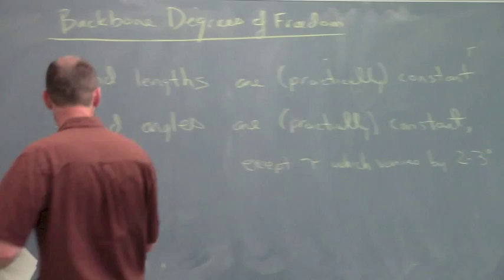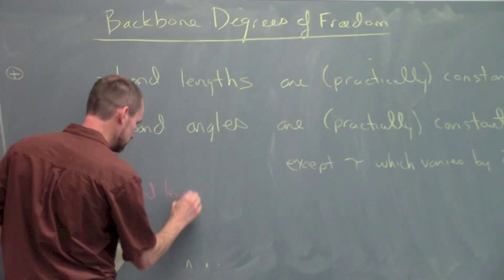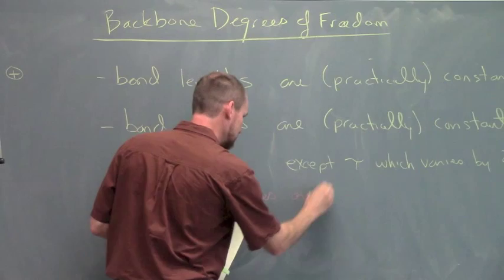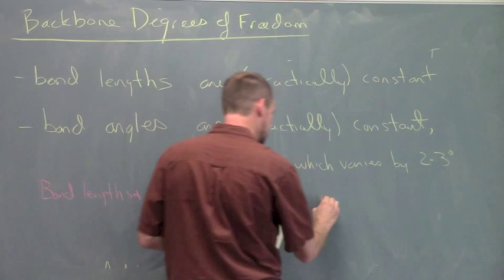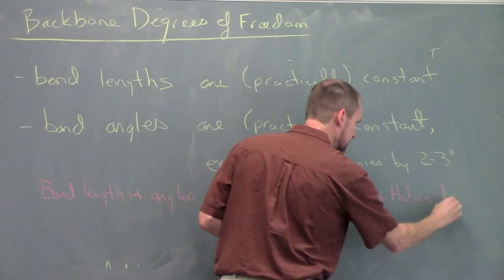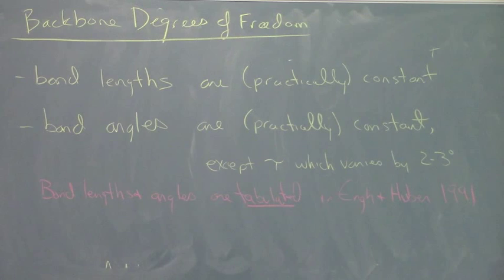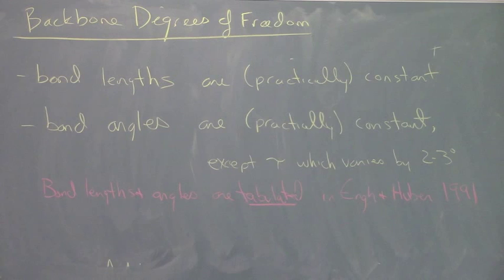If we're going to predict the structure of proteins, most of the good methods use average constant values for this. There's definitely a question in the research whether we could get better by letting these values vary a little bit, but for the moment we'll keep those constant. Bond lengths and angles are tabulated in a paper by Engh and Huber back in 1991.